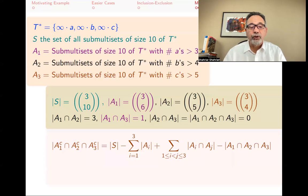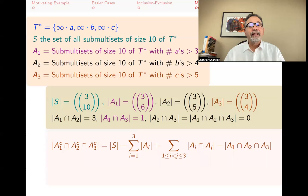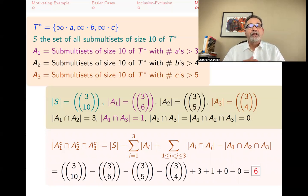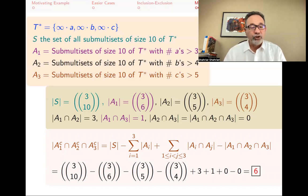Now applying the inclusion-exclusion principle: take the ambient set size, subtract the sizes of A1, A2, A3, add back pairwise intersections, and subtract the triple intersection. The last term is zero so it doesn't contribute. Plugging in these numbers gives an alternating sum that yields the answer: six. The answer is small enough that one might have just listed all possibilities, but this was a proof of concept.